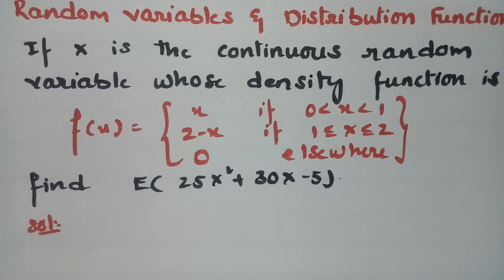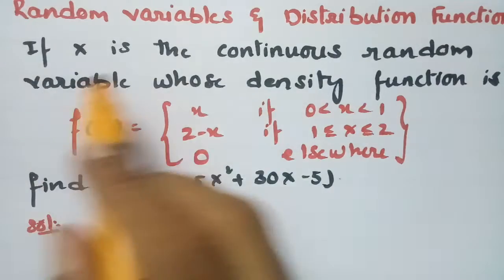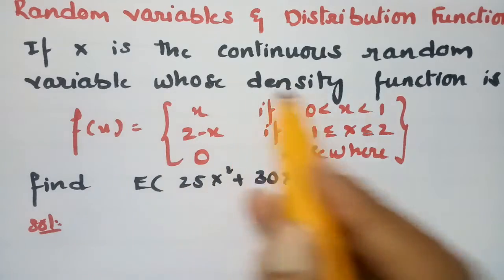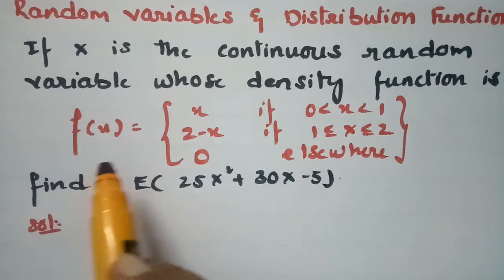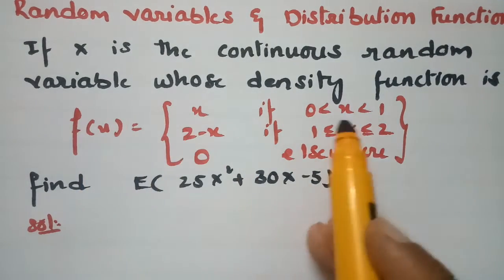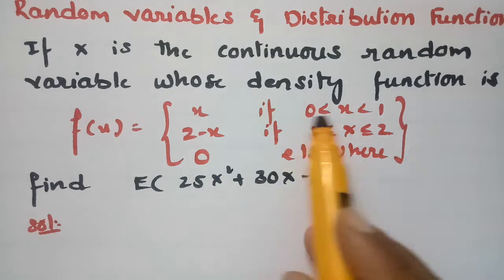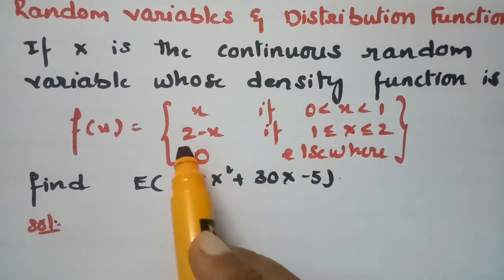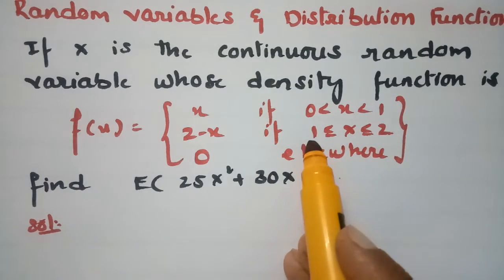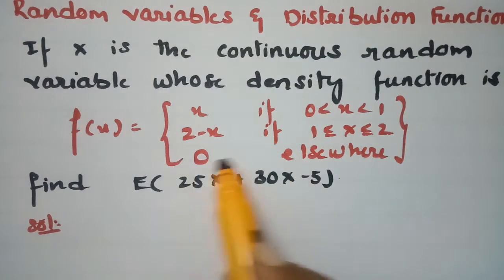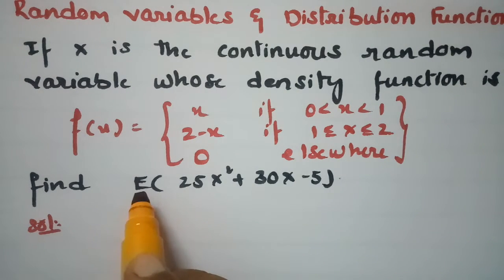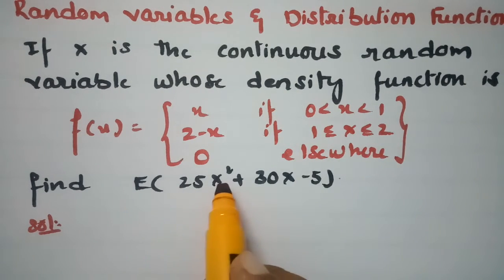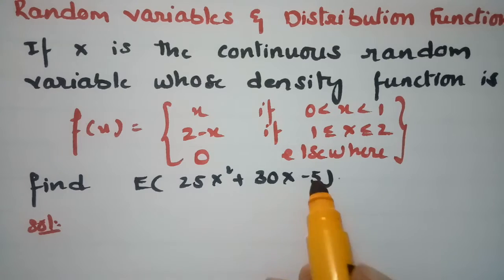This problem is from random variables and distribution functions. If x is a continuous random variable whose density function is given as f(x) = x for x in [0,1], f(x) = 2 minus x for x in [1,2], and 0 elsewhere. We have to find the expected value of 25x squared plus 30x minus 5.